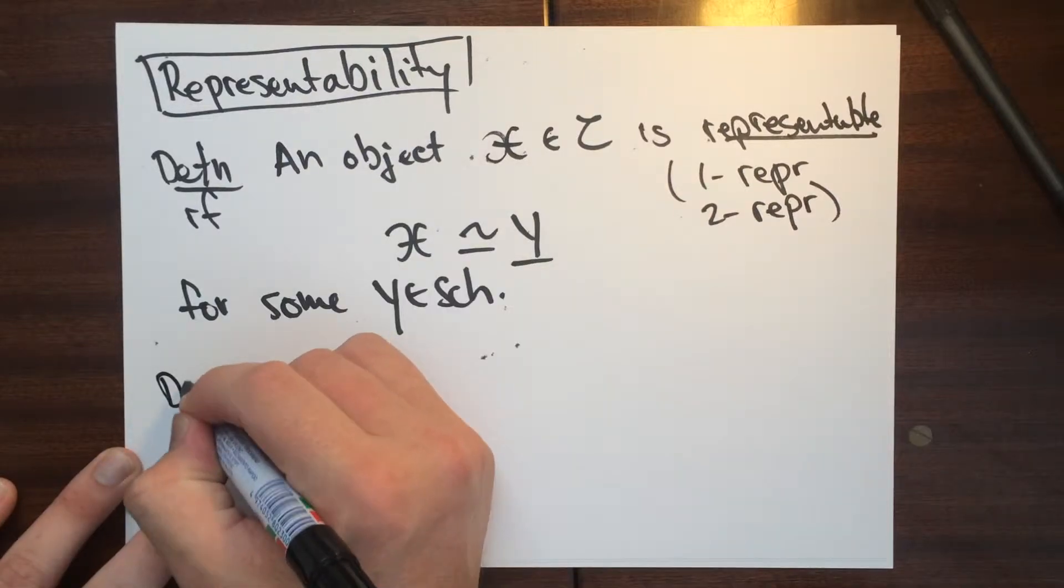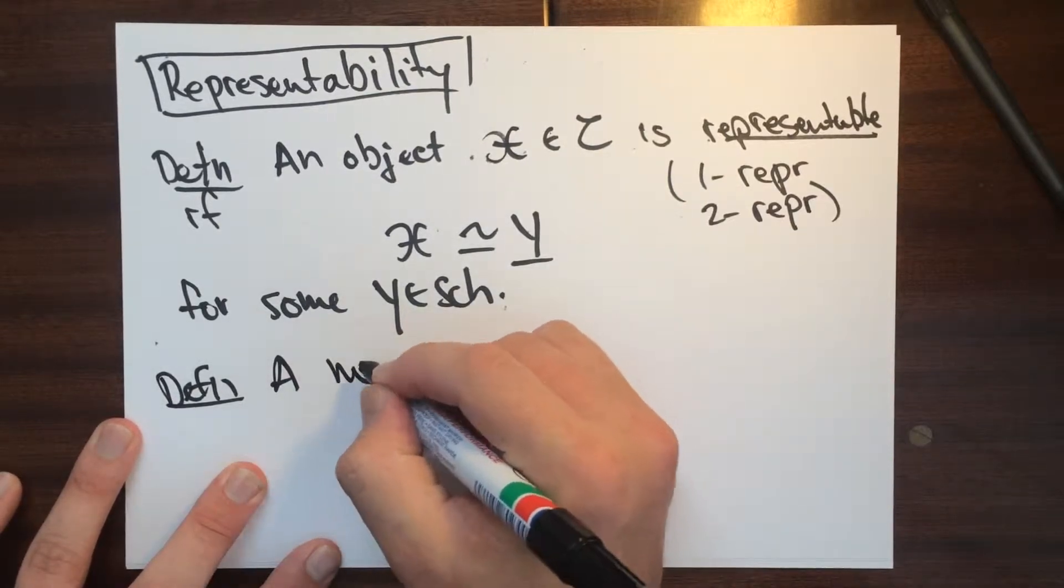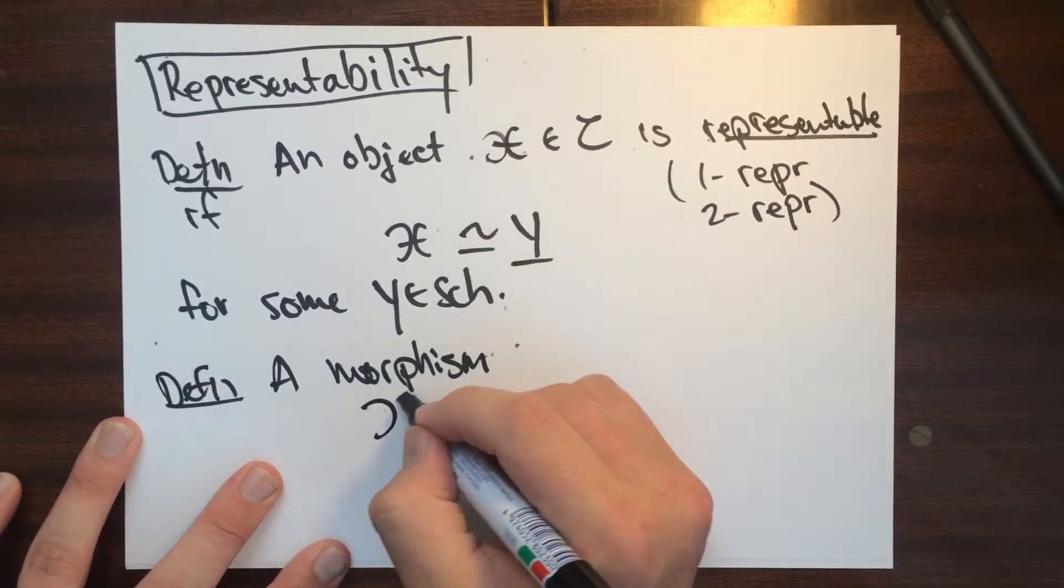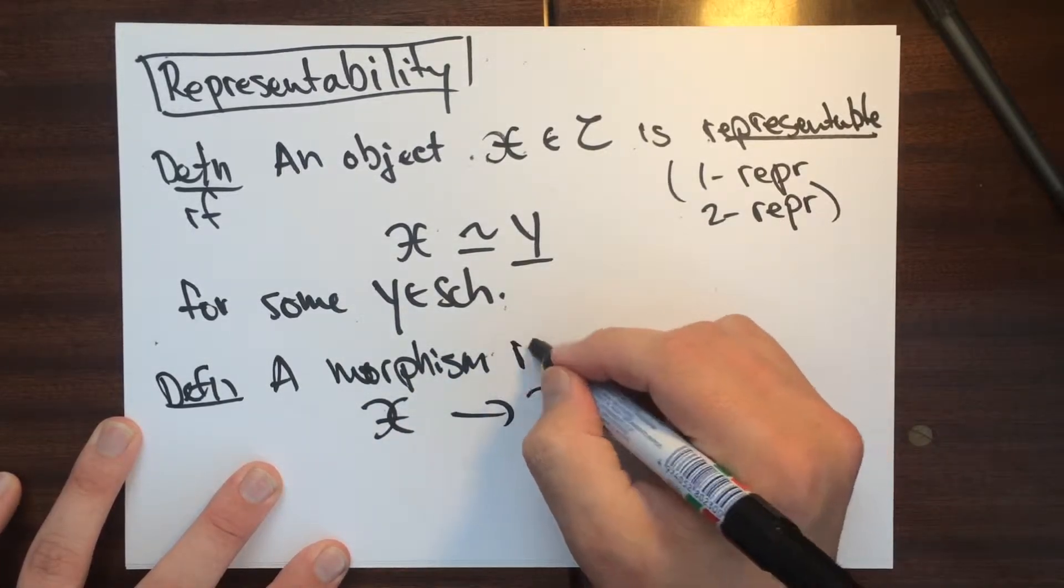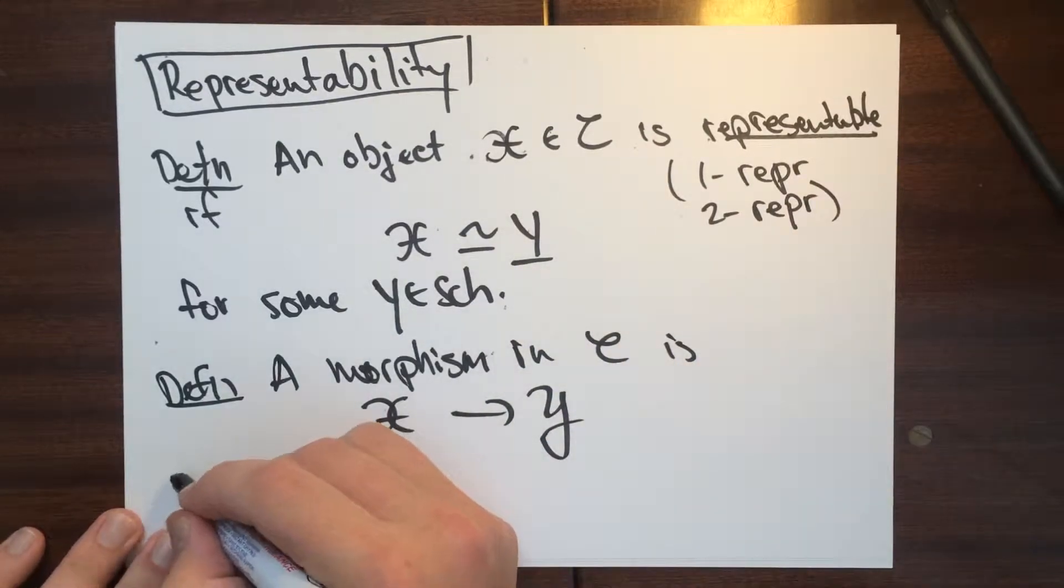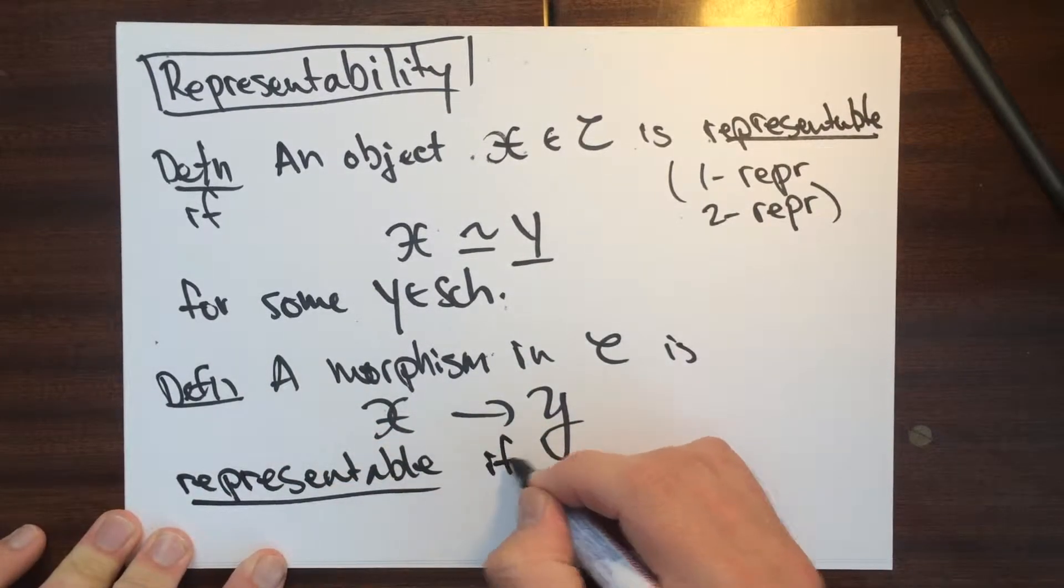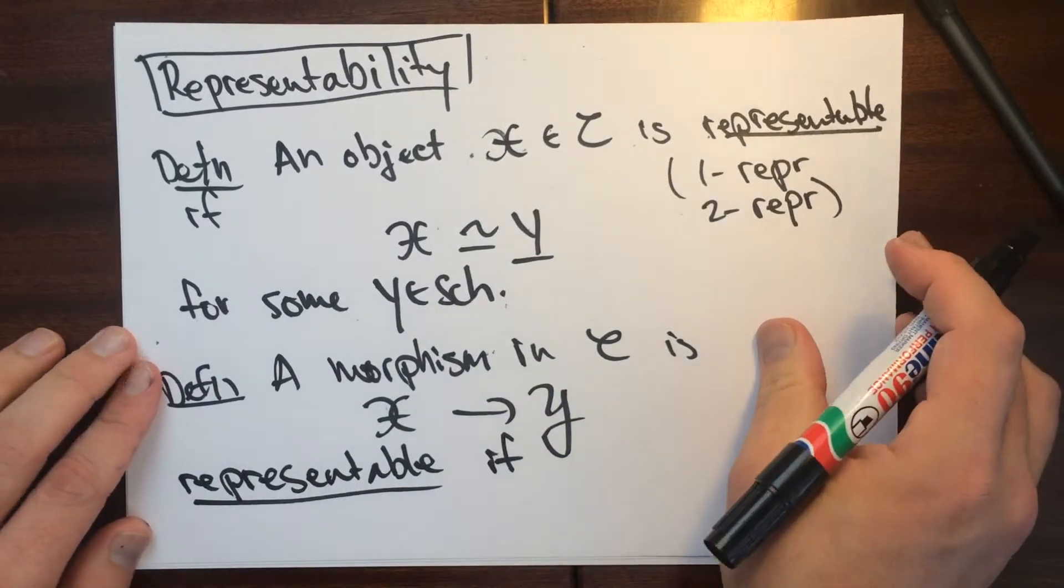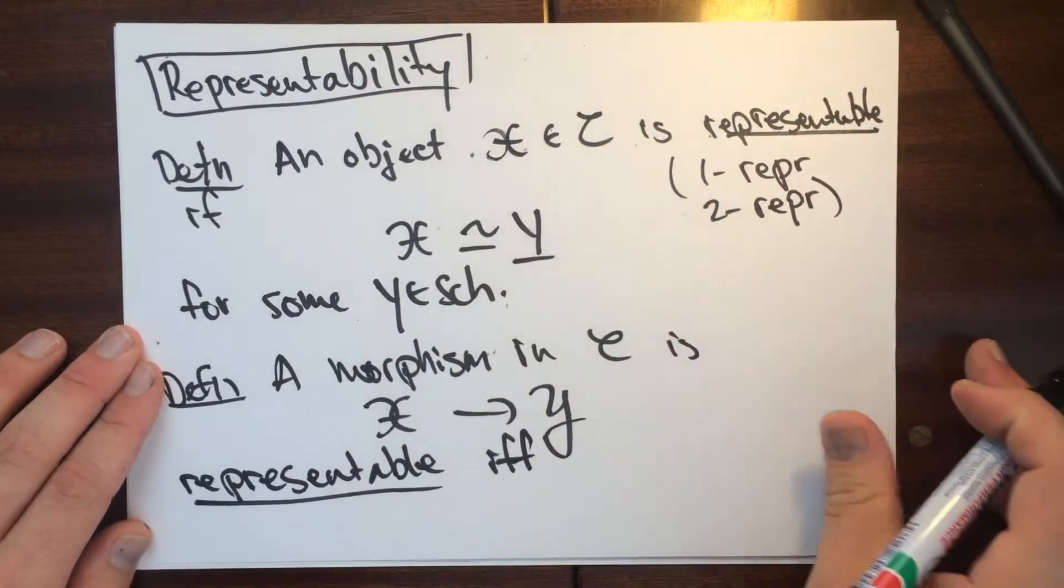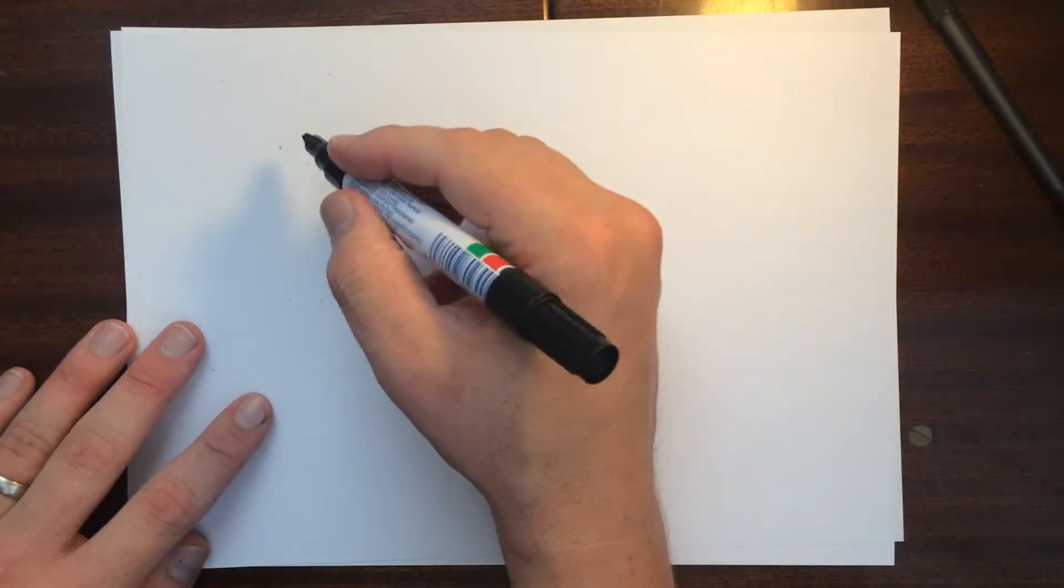So now I can give you the definition of when a morphism is representable. So a morphism in the category C, let's say X to Y in C, is representable if the following holds. So now I'm going to do something kind of weird, so if and only if, well, the situation is as follows.